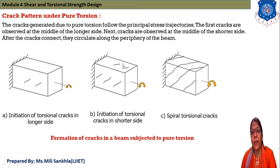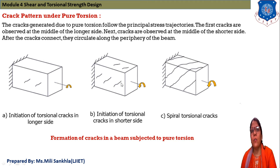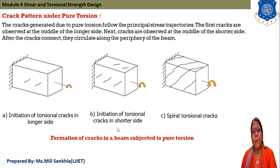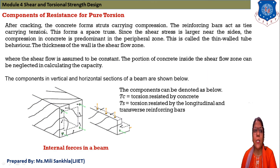Then cracks are observed at the middle of the shorter side. After that, when the horizontal cracks at the shorter side and longer side connect, they create a periphery around the beam. For a cantilever beam under torsion: first, crack is induced in the longer side at the middle portion; then crack is induced at the shorter side middle portion. When the longer side and shorter side cracks connect, they form a periphery along the beam. This is the sequence of crack formation due to pure torsion.